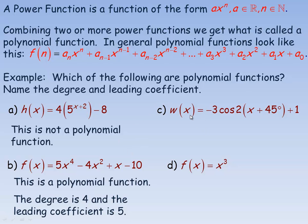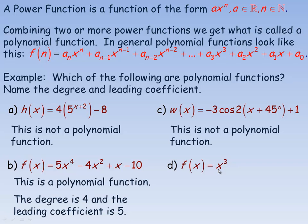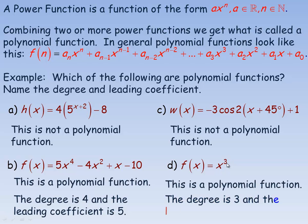In part c, w of x equals negative 3 cos(2x) plus 45 plus 1. The cosine means this is actually a trigonometric function — it is not a polynomial function. For part d, although it's just x cubed, it is a power function and a simple version of a polynomial function. The degree would be three and the leading coefficient is one, because there's actually a 1 beside the x cubed. That's the end of the power part of this lesson.